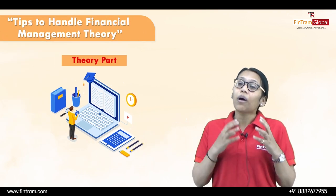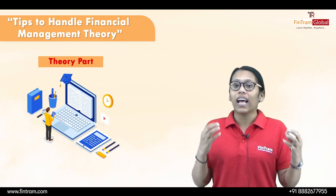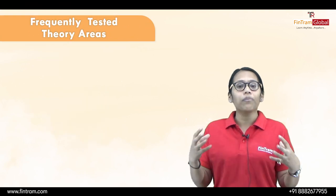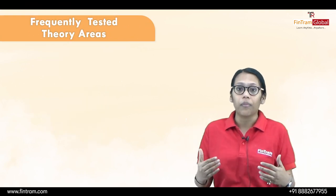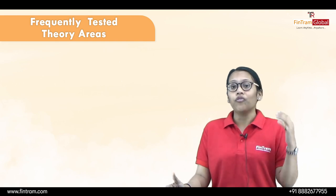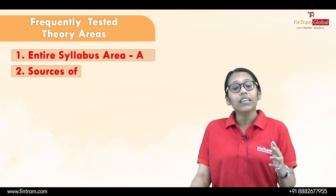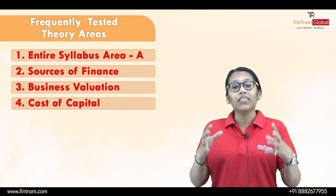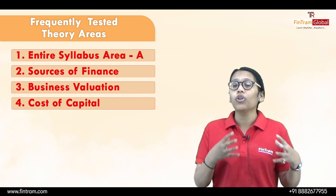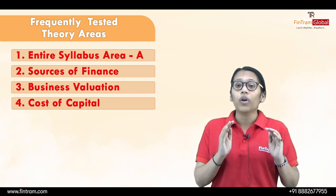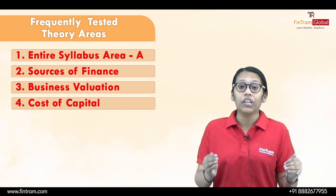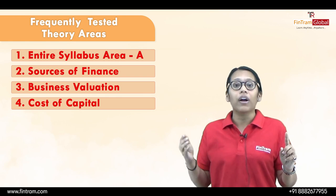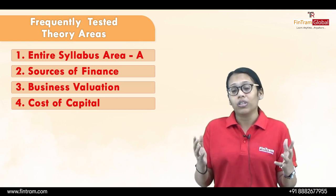Today I'm here to give you some tips and tricks to handle financial management theory. The first thing you need to understand is what are those prime areas from where the theory questions are going to come. Those areas are firstly the entire section A, then sources of finance, then business valuation, and then cost of capital. These are the prime areas from where theory questions are asked heavily, so you need to have proper concept clarity regarding theory from these areas. But that does not mean that from other parts of the syllabus, theory questions cannot come.